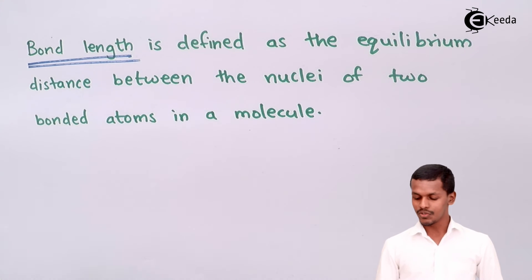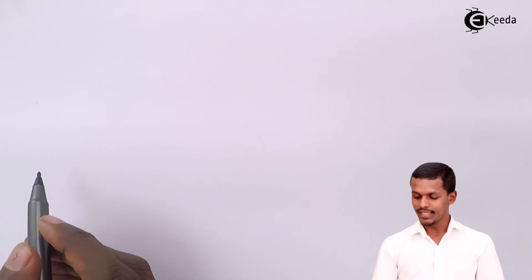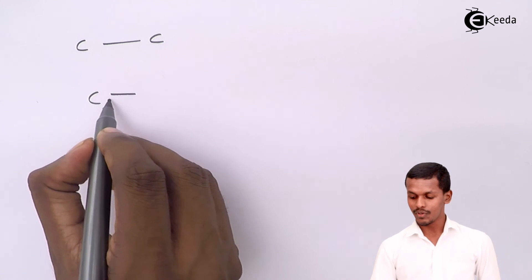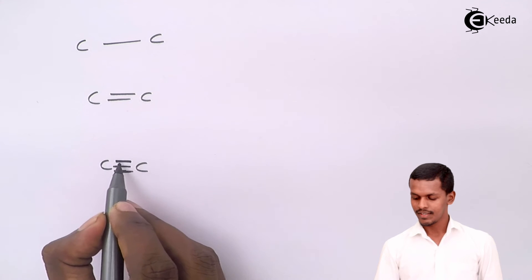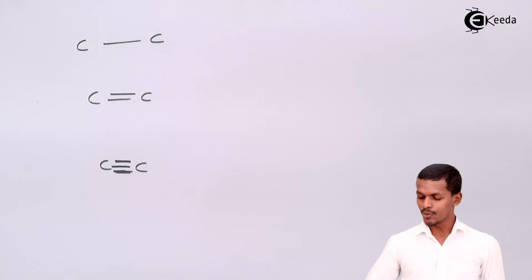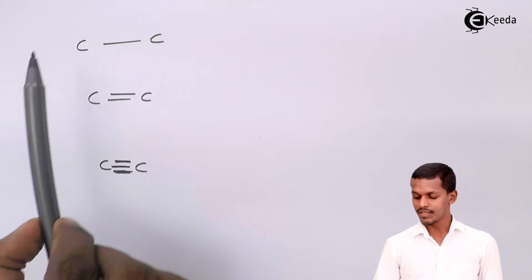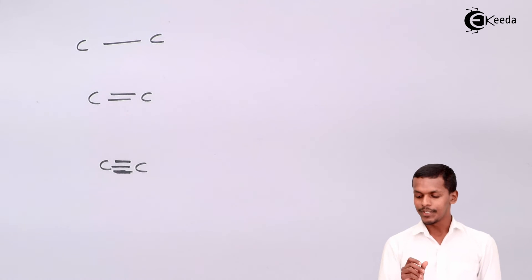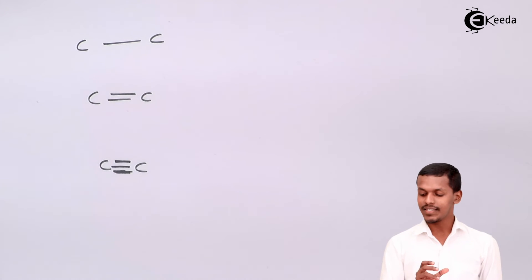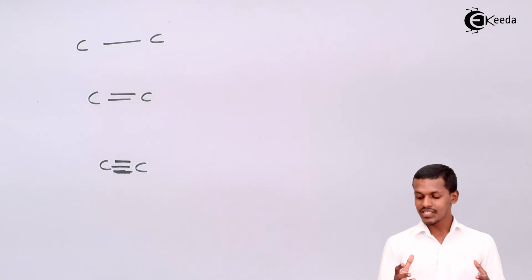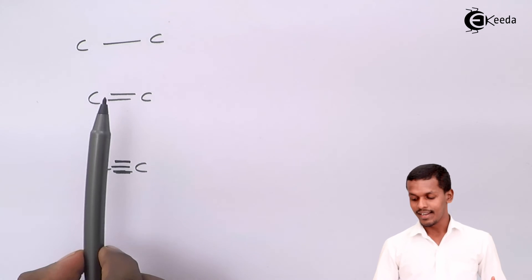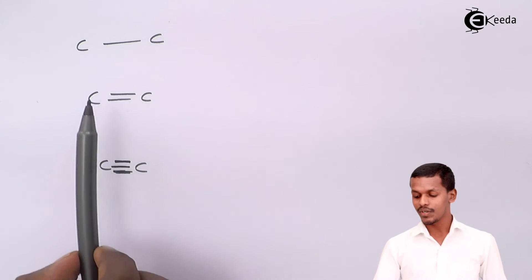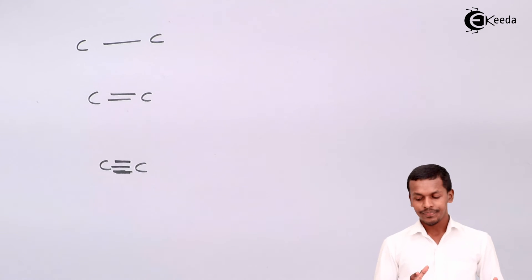Taking the examples of carbon-carbon single bond, carbon-carbon double bond, and carbon-carbon triple bond: the carbon-carbon single bond has the largest bond length, the double bond has a smaller length, and the triple bond has the least length between the two carbons. Because the triple bond has the most interaction, more energy is required to break it, while least energy is required to break the single bond.